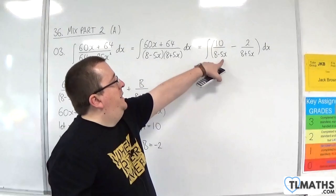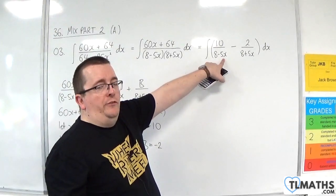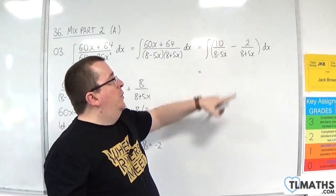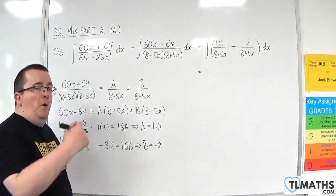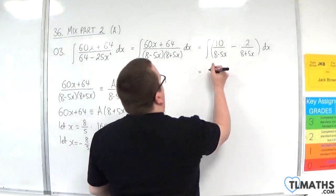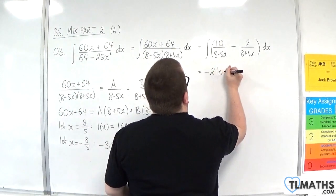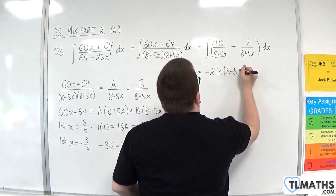Now, the denominator here differentiates to minus 5, and we've got 10 on the top. So we've got minus 2 of what we need. So that's minus 2 times the natural log of the modulus of 8 take away 5x.